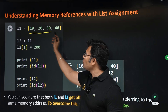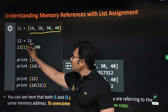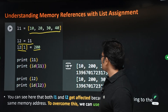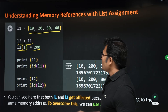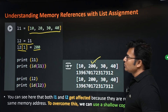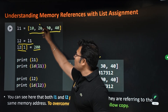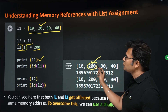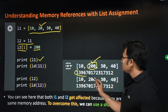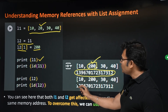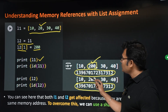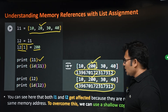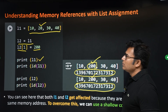For example, l1 equals [10, 20, 30, 40]. Now l2 equal to l1 is done. If you modify l2[1] equal to 200, the first element is modified from 20 to 200. If you print l1, you see that modification in l1 also. If you check the id of l1 and l2, the same id is shown, which means the same object is modified — both are pointing to the same object.